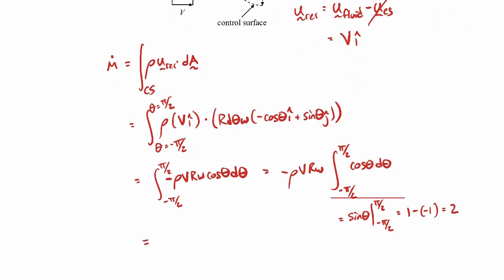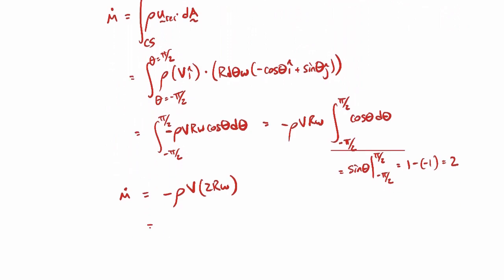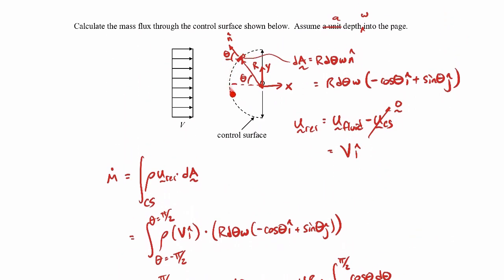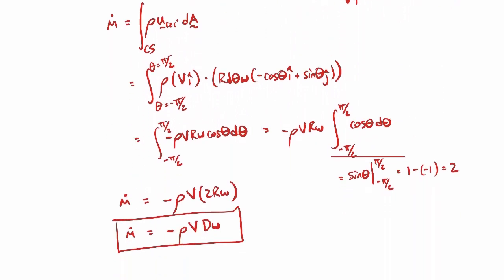So in the end, what we get is a minus rho v times 2r times w. And the 2r, by the way, I could also just write as a diameter. So that's our mass flow rate. The negative here refers to the fact that the mass flow rate is coming in to the control surface. It's actually coming into the surface rather than out. So that's where we get the negative from, just showing that the mass flow rate is coming in.